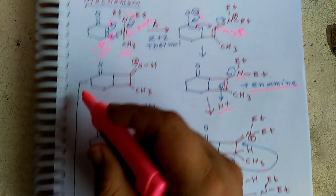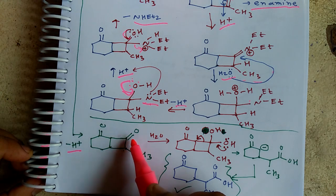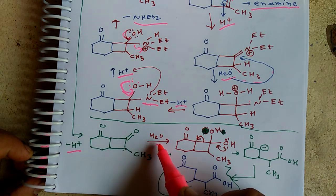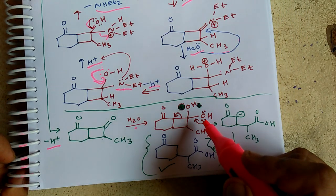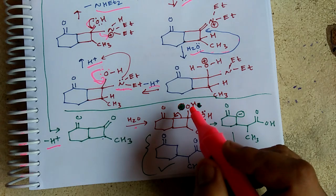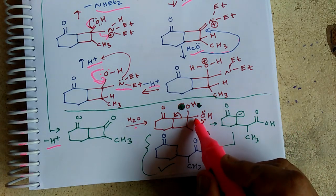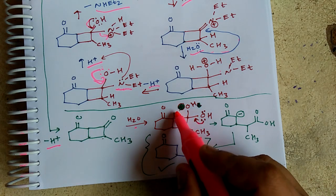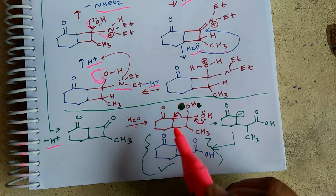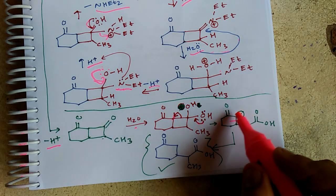Continuing the mechanism: deprotonation takes place and the ketone forms. Again water attacks at this position, then a diol forms. We know that a diol is very unstable and opens up to give an acid. Electrons are transferred here, and the ring opens at the alpha position. The negative charge is stabilized at the alpha position by resonance.